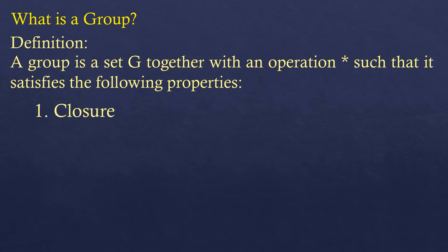First, closure: meaning if A and B are elements of set G, then A star B is also an element of G. For example, if you add two integers, the result is also an integer; if you multiply two integers, the result is also an integer.